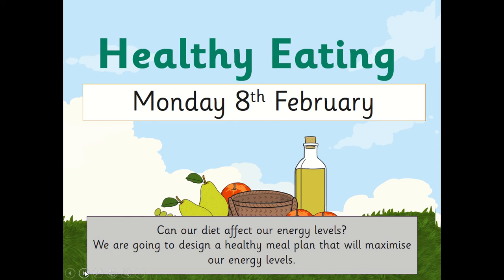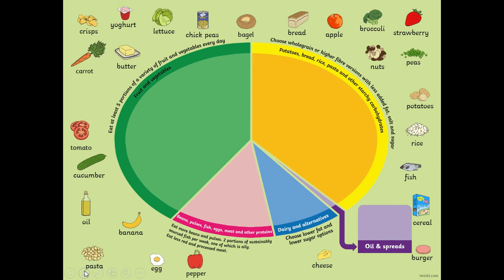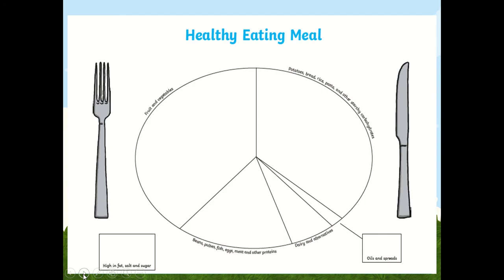Last week we looked at the balanced meal plate. We did the sorting activity and we can see that our meals should be made up of mostly fruit and vegetables and potatoes — the carbohydrates — and then you've got the smaller protein section, even smaller dairy and alternatives, and then the smallest is the oils and spreads. You are going to have a sheet that looks like this.